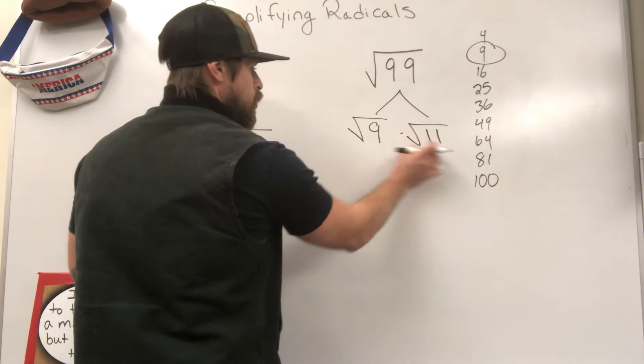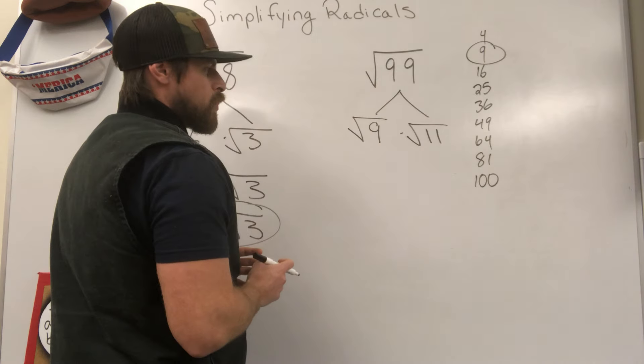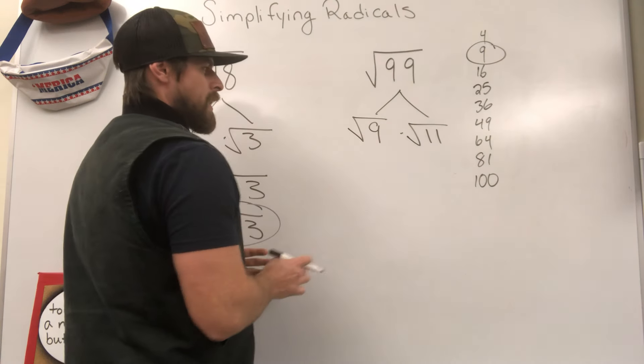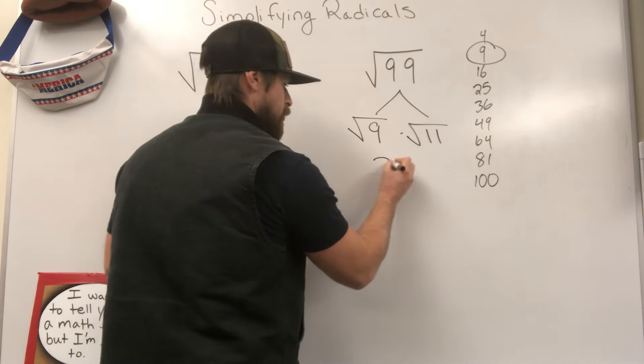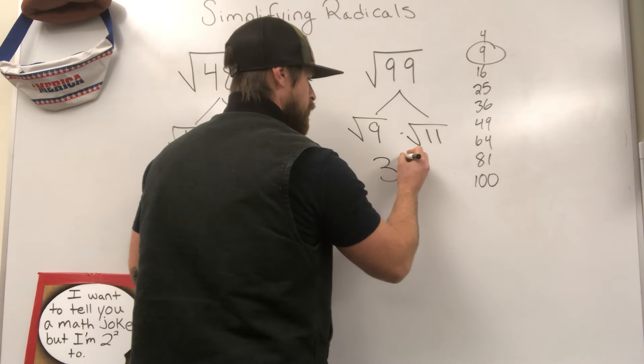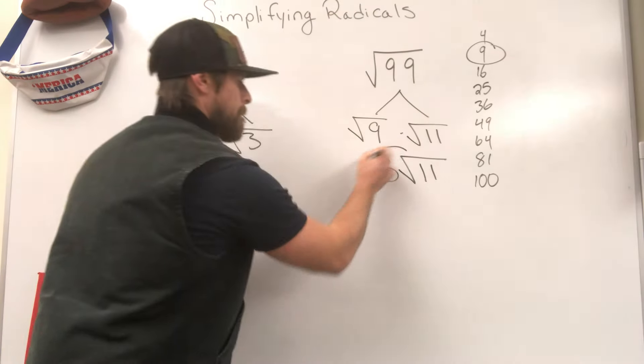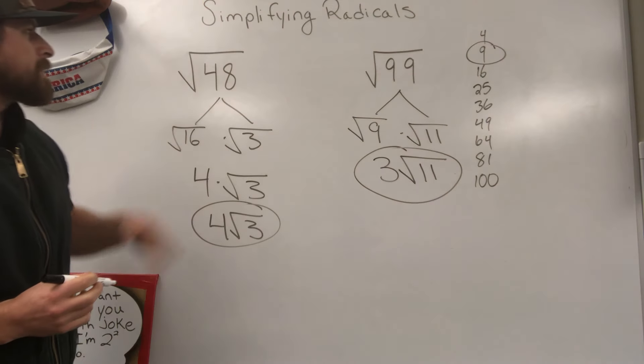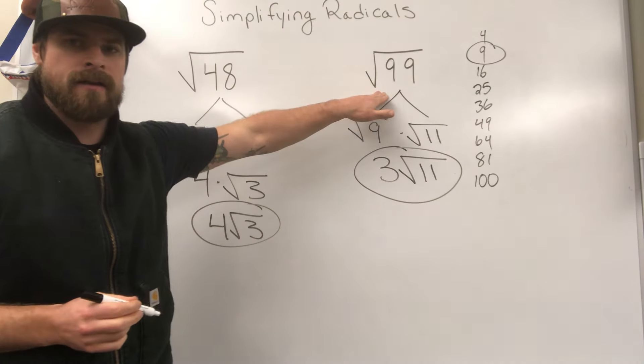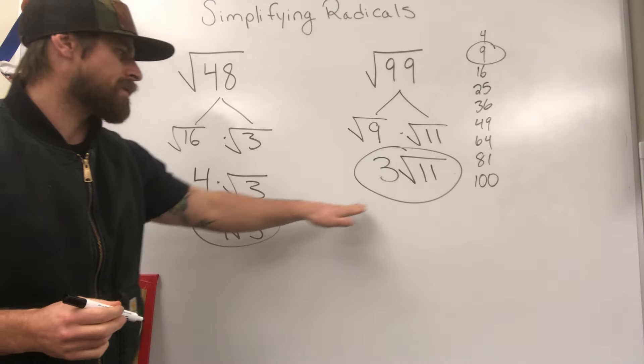Out of these two, only one of them can be simplified into a whole number, and that's the perfect square. The square root of 9 is 3. So our final result is 3 root 11. We have taken each of these radicals and simplified them as far as we can go.